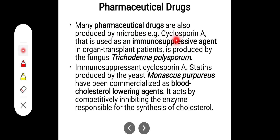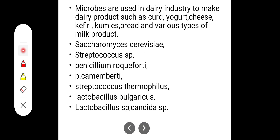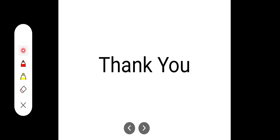Many pharmaceutical drugs are also produced by microorganisms. Cyclosporin A, used as an immunosuppressant in organ transplant patients, is produced by the fungus Trichoderma polysporum. Strains of the yeast Monascus purpureus have been commercialized as a blood cholesterol-lowering agent, acting by competitively inhibiting the enzyme responsible for cholesterol synthesis. Dairy products are also produced using various microorganisms such as Saccharomyces cerevisiae, Streptococcus, Penicillium, and Lactobacillus. Knowing the name of the microorganism and the product it produces is the key takeaway.